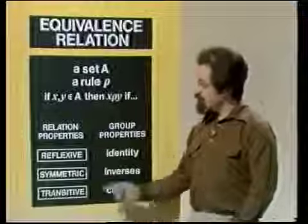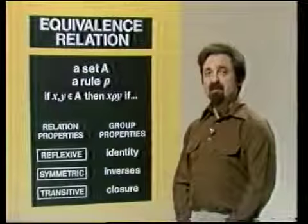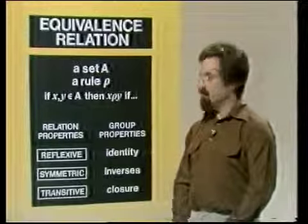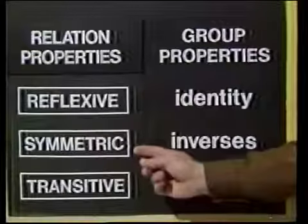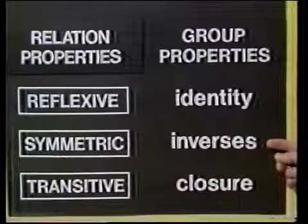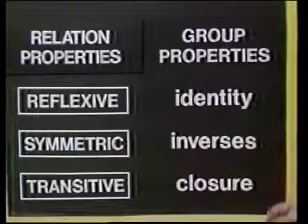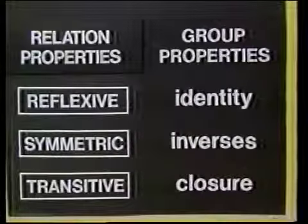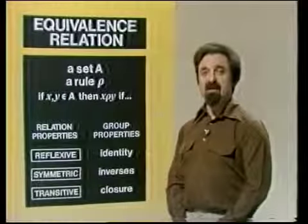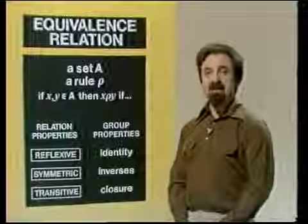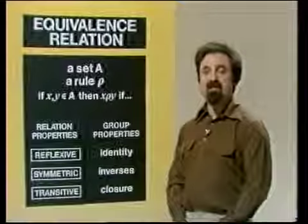You might have realized that these three properties of equivalence relations are closely related to the axioms for a group. In our example, the symmetries of the triangle formed a group: the reflexive property corresponded to there being an identity operation which keeps everything fixed; the symmetric property corresponded to the existence of inverses, which take you back again; and the transitive property corresponded to the group axiom of closure — that combining two operations in the group always gives you a third operation in the group. This connection between equivalence relations and groups is fascinating, and we'll use it in our next problem. We're going to look at another example of a relation to see whether it's an equivalence relation, and this time we'll show you how to write down a proof that these three properties hold.